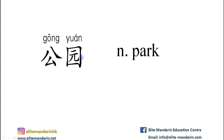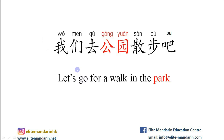公园 — it means park. The example: 我们去公园散步吧。 我们 (we), 去 (to go to), 公园 (park), 散步 (go for a walk). Let's go for a walk in the park.